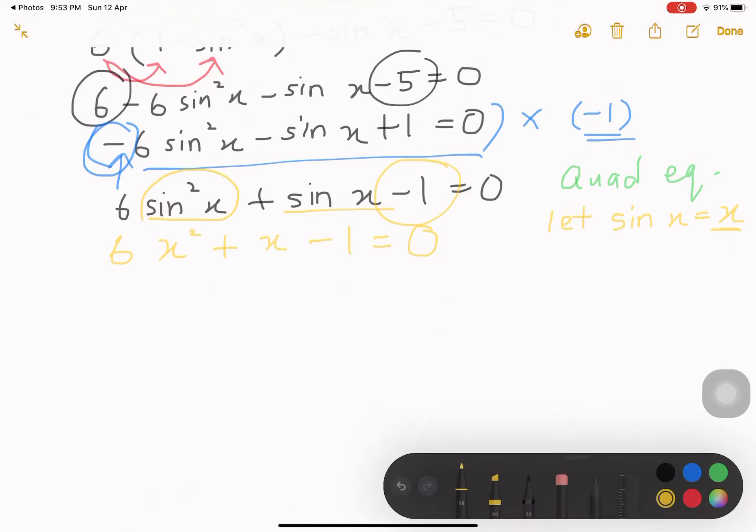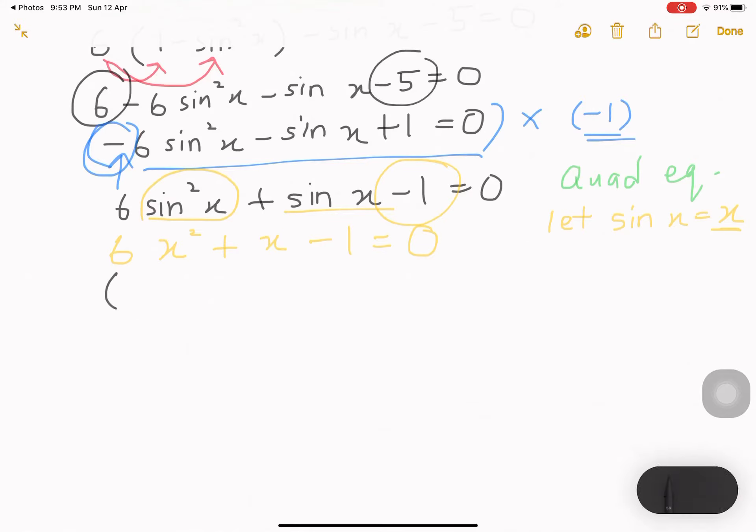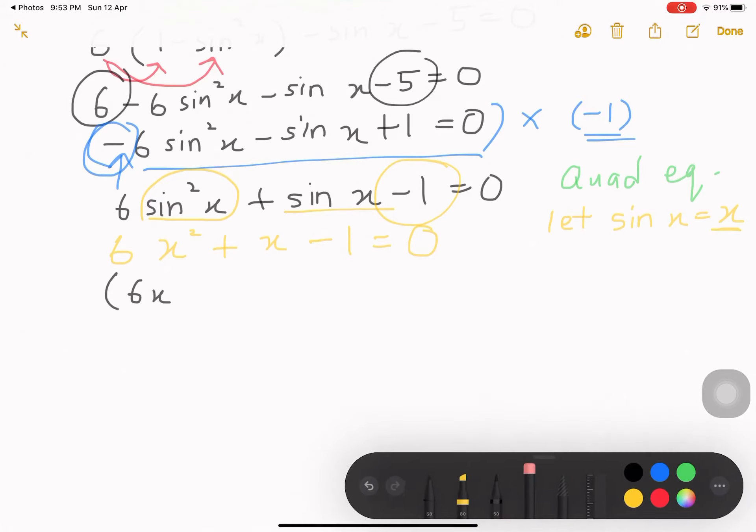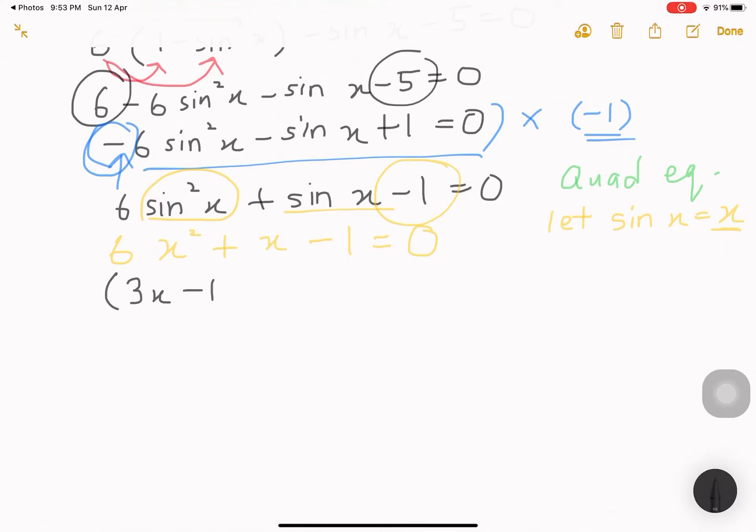Now, take your calculator, then you can calculate using the factorization, and you'll get 6x. Oh, sorry. It's not supposed to be 6. It's supposed to be 3x minus 1, and another one will be 2x plus 1 equals to 0. What I do next is, you already got your quality equation, I need to replace back.